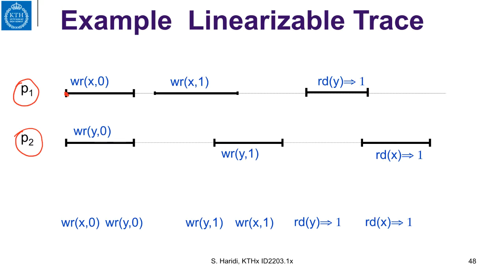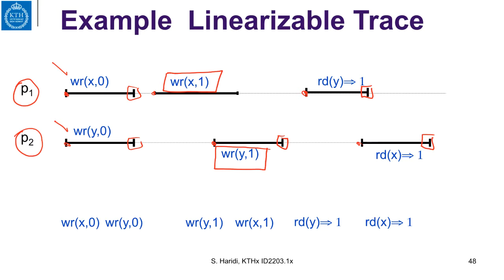The trace has invocations at the beginning and responses at the end. Process P1 writes register X with value 0 initially, and the same happens for register Y. So at this point X and Y have value 0. Then we have a write operation on X giving value 1, and a write operation by P2 for Y updating Y to 1. There is a read of Y returning 1, and a read of X returning 1. This execution is linearizable.